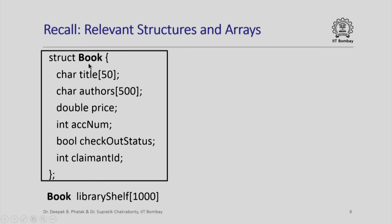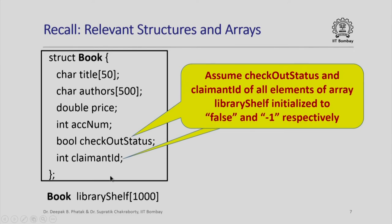The structure book is going to have different members storing different information about the book, like the title, authors, price, accession number, checkout status, and claimant ID. All the books in the library are going to be stored in the array library shelf, which will have 1000 elements. Every element of library shelf will have its checkout status and claimant ID members initialized to false and minus one, respectively. Checkout status being false means the book has not been checked out, and claimant ID being minus one means there are no current claimants for this book.